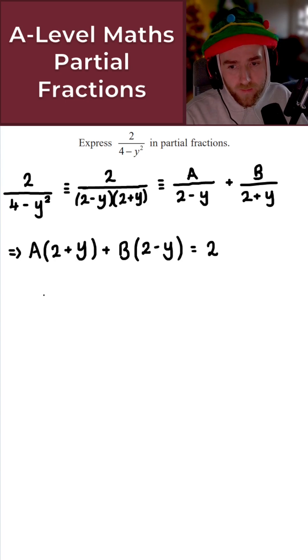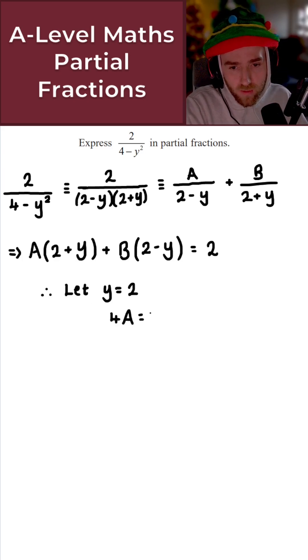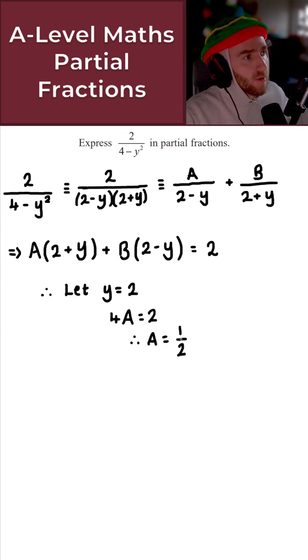So for example, if I let y equal 2, then what I'd get here is 2 minus 2, which is 0. B times 0 is just 0. In that case, we've eliminated B and we can solve for A. So what I get here is 4A equals 2. And in that case, A here is simply 1 over 2. Perfect.